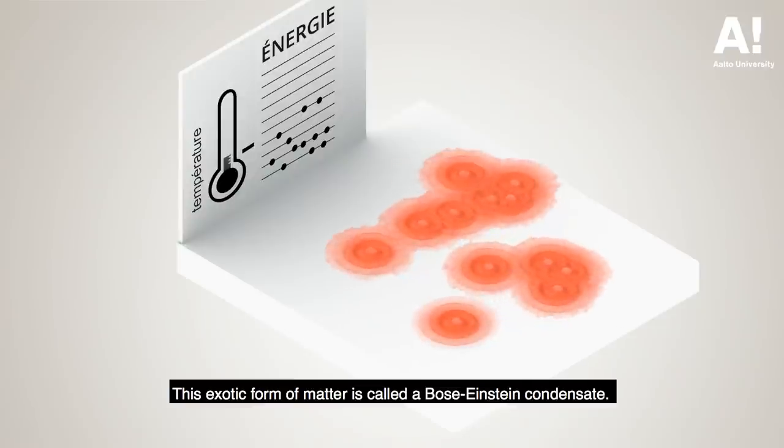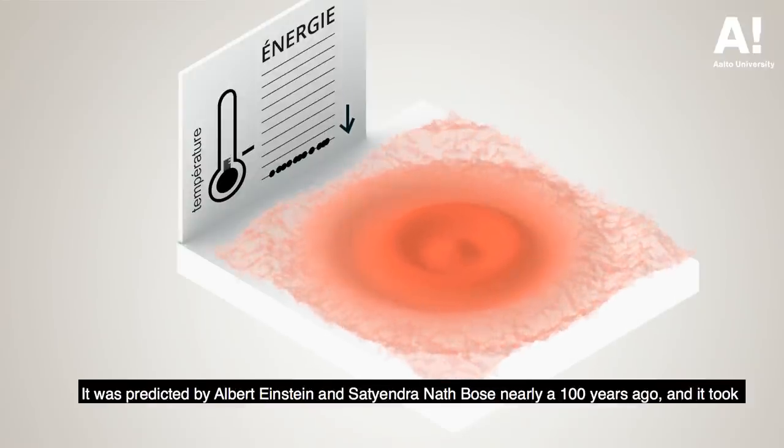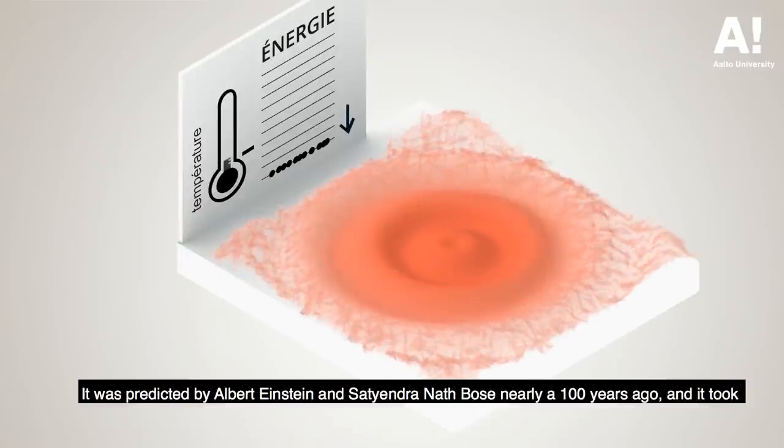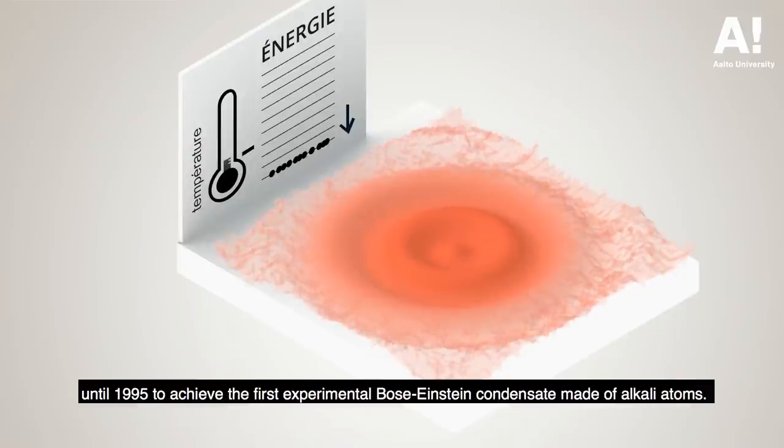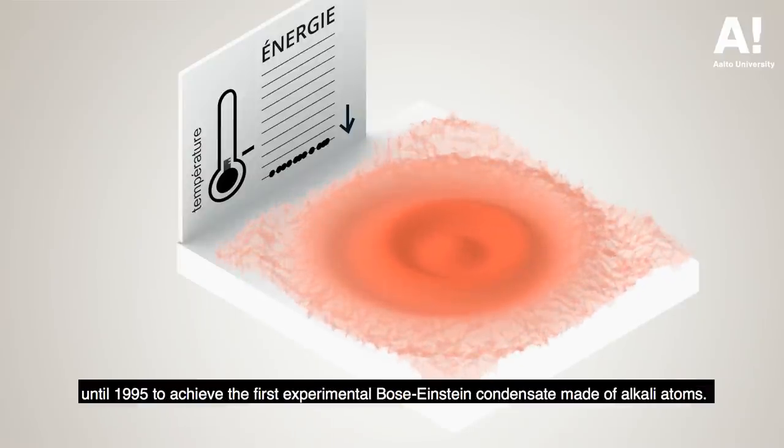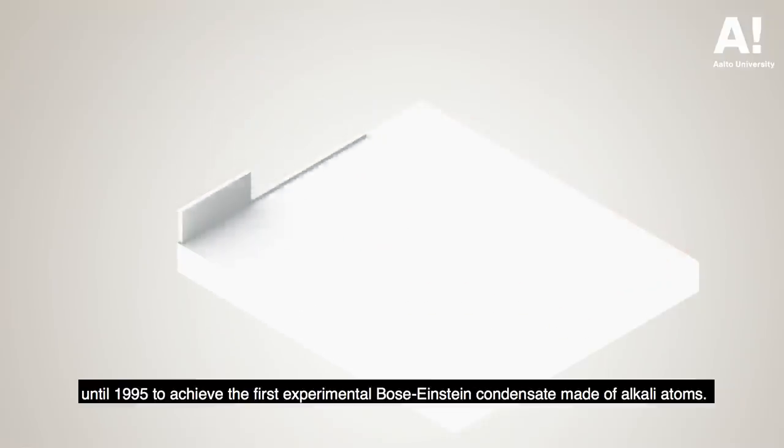This exotic form of matter is called a Bose-Einstein condensate. It was predicted by Albert Einstein and Satyendra Nath Bose nearly a hundred years ago, and it took until 1995 to achieve the first experimental Bose-Einstein condensate made of alkali atoms.